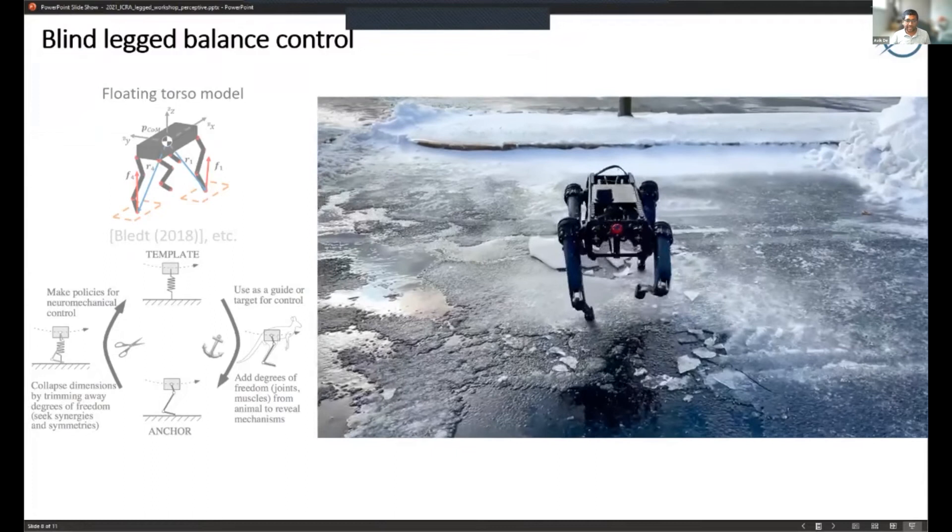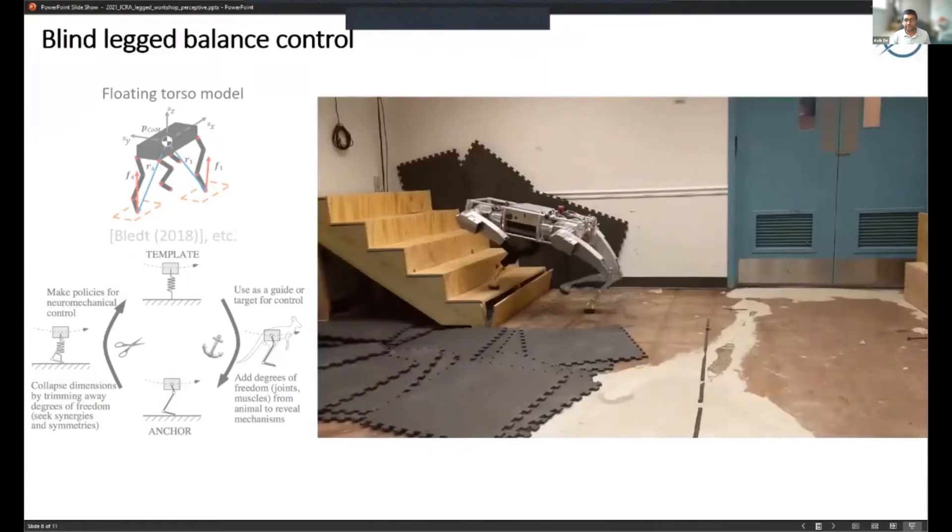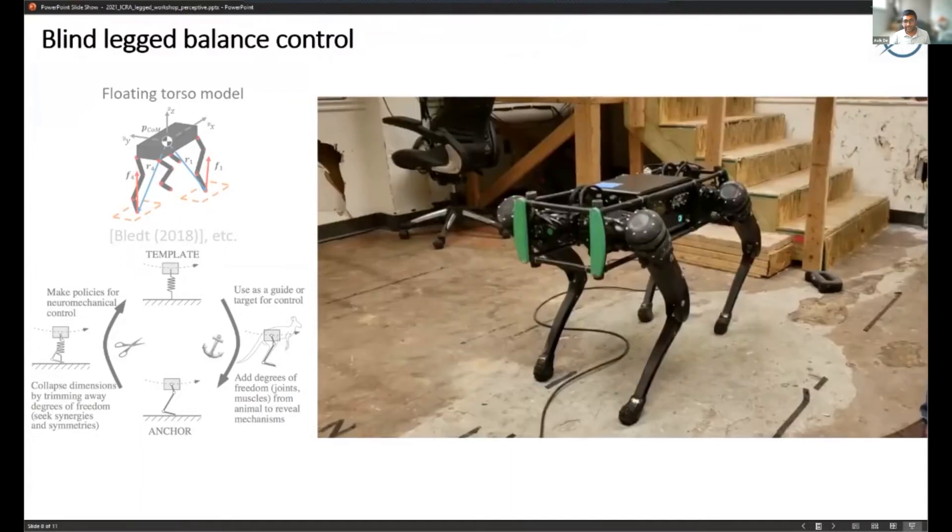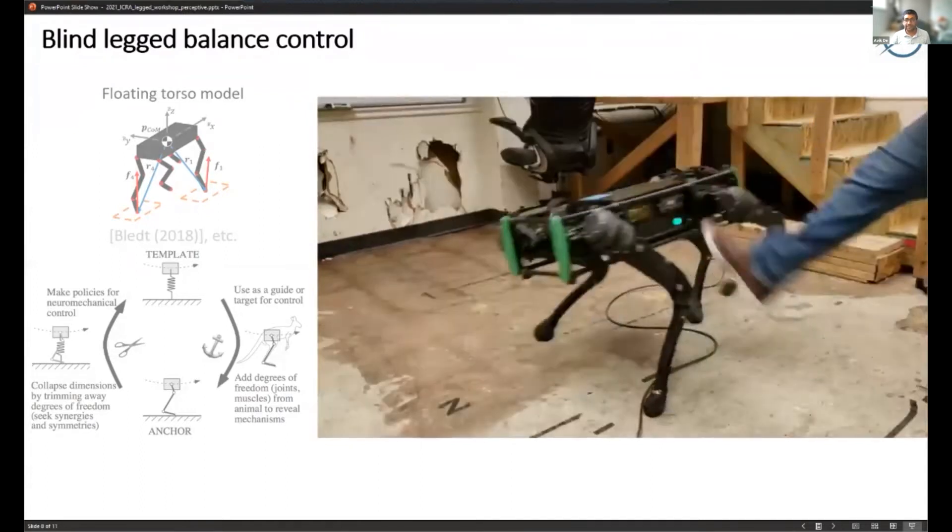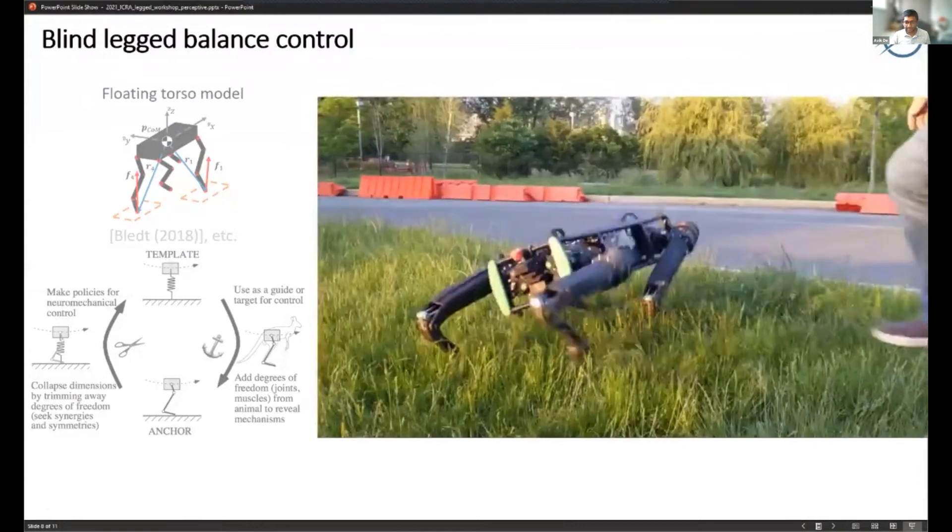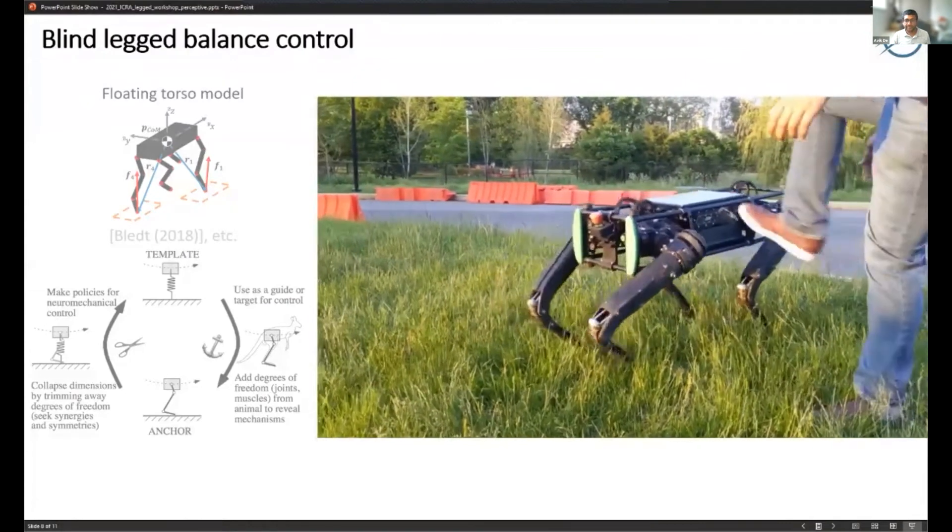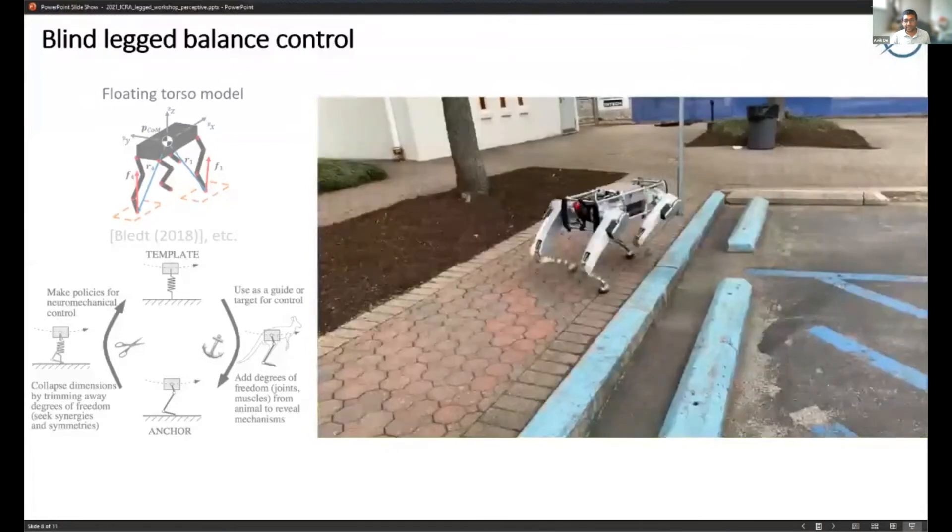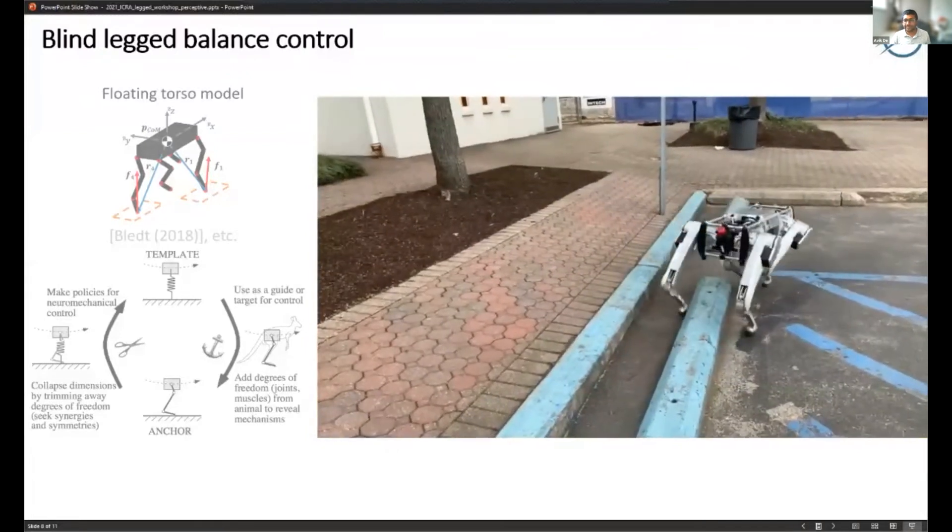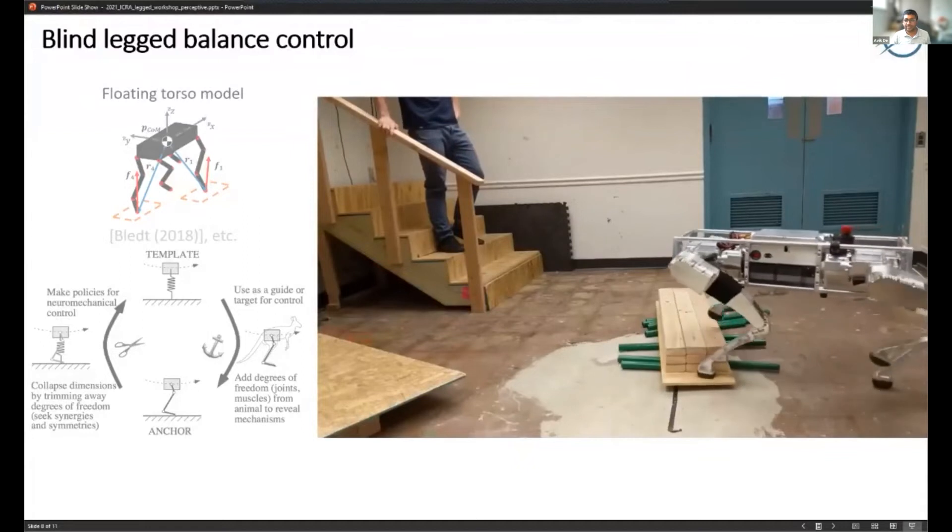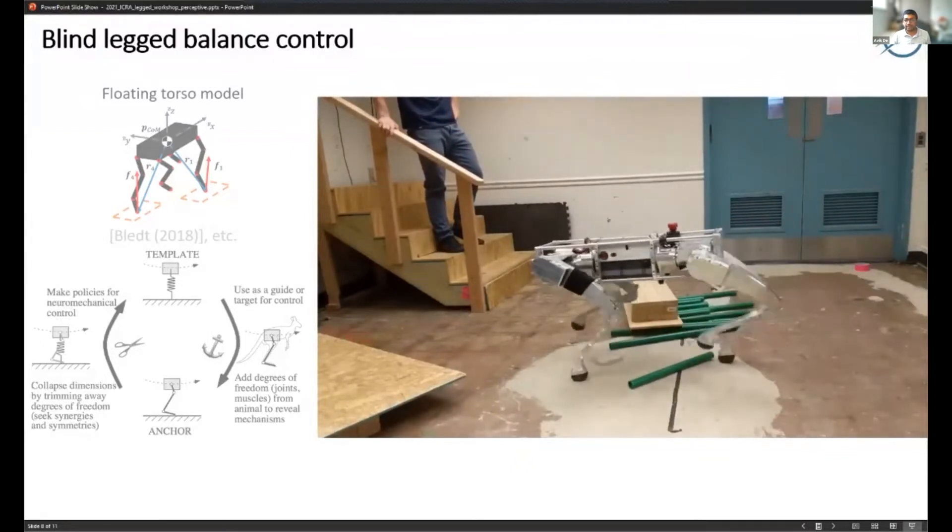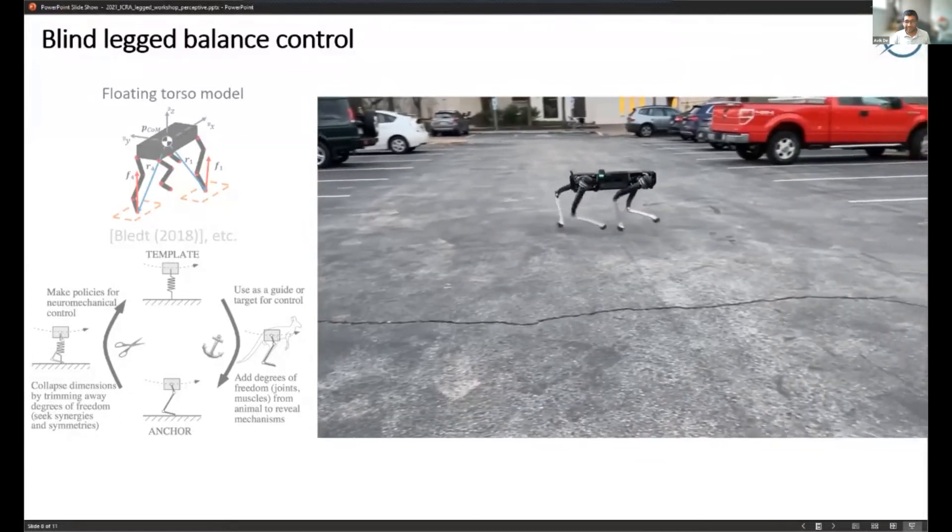We have this blind control layer. All of the tasks the robot's doing in these videos - whether it be running, recovering from perturbations, or even climbing stairs - for all of these the robot is completely blind. All of the control effort for the body and stance is just going into keeping the floating torso stable.